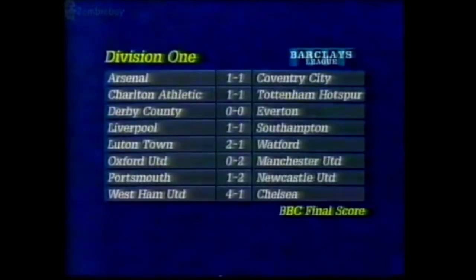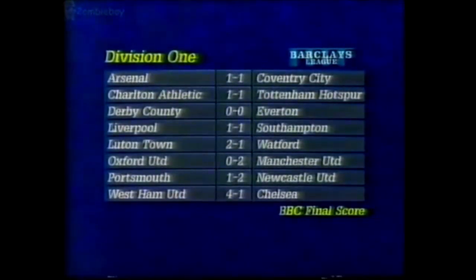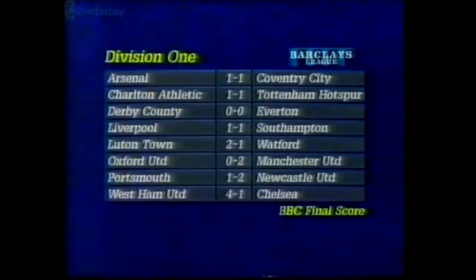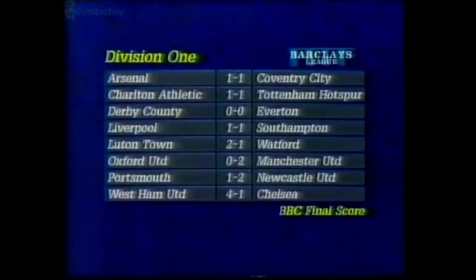Barclays League Division 1 results: Arsenal 1, Coventry City 1. Charlton Athletic 1, Tottenham Hotspur 1. Derby County 0, Everton 0. Liverpool 1, Southampton 1. Luton Town 2, Watford 1. Oxford United 0, Manchester United 2. Portsmouth 1, Newcastle United 2. West Ham United 4, Chelsea 1.